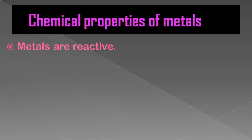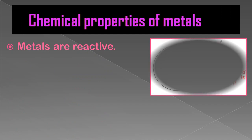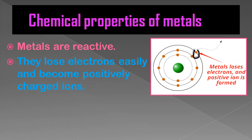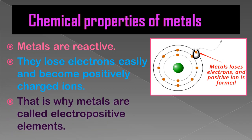Metals are highly reactive because they lose electrons easily and become positively charged — they form cations. So a metal loses an electron and a positively charged ion, called a cation, is formed. That is why metals are called electropositive elements — because metals have the ability to lose electrons and attain their octet state.